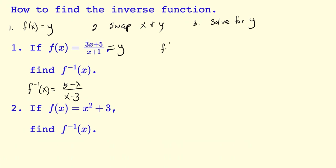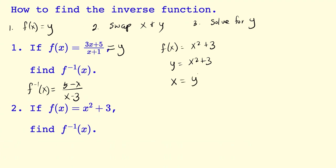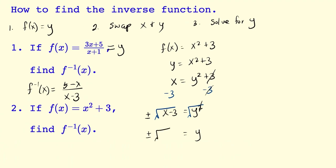Our second problem: f of x is equal to x squared plus 3. We're going to rewrite this as y is equal to x squared plus 3. That's our first step. Our second step is swapping the x and the y — y becomes x, and x becomes y squared plus 3. Now we're going to solve for y. Let's start by moving the 3 to the other side by subtracting 3. We get x minus 3 is equal to y squared. Take the square root on both sides, and we will need a plus or minus. y is equal to plus or minus the square root of x minus 3, and this is going to be our inverse function of x.